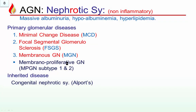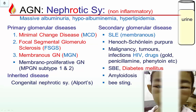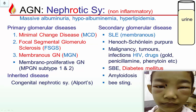Nephrotic syndrome, which is non-inflammatory, presents with massive albuminuria, hypoalbuminemia, and hyperlipidemia. Three diseases we will discuss under this: minimal change disease, focal segmental, and membranous. Other causes include diabetes, which we have covered separately — the microalbuminuria of diabetes. The classic picture is a young child with edema around the face and normal or increased urine with significant albuminuria; the edema is due to hypoproteinemia in the blood.